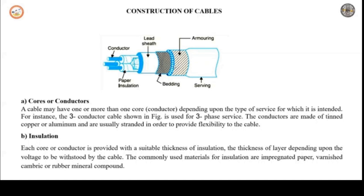Next is armoring. This layer consists of layers of galvanized steel wires which provide protection to the cable from mechanical injury. Next is serving — the last layer above the armoring. It is a layer of fibrous material like jute cloth which protects the armoring from atmospheric conditions.